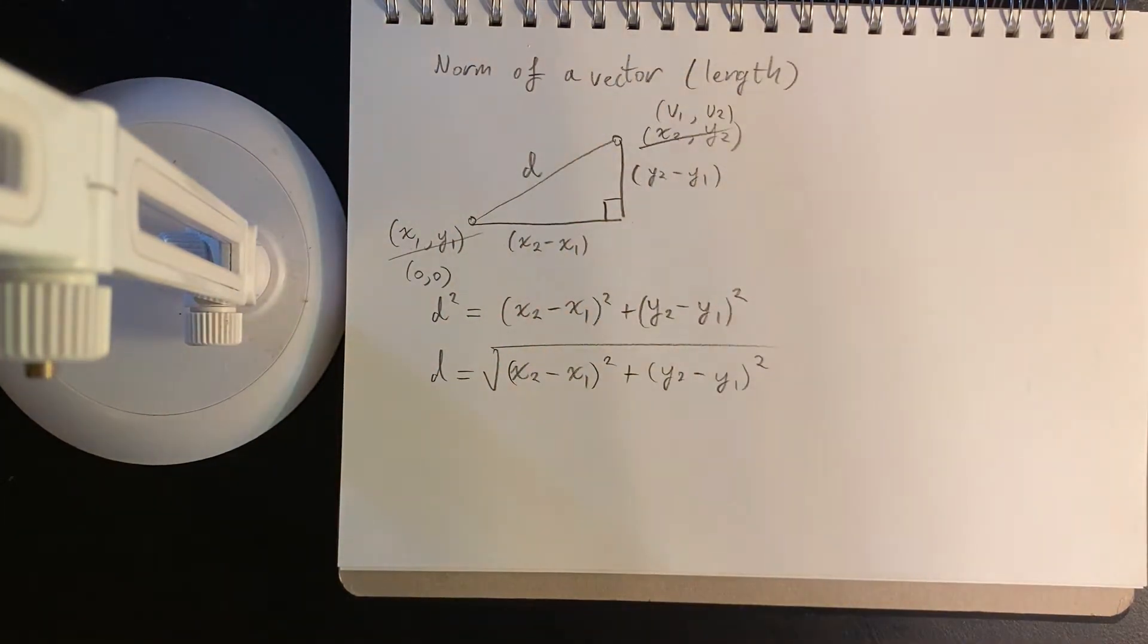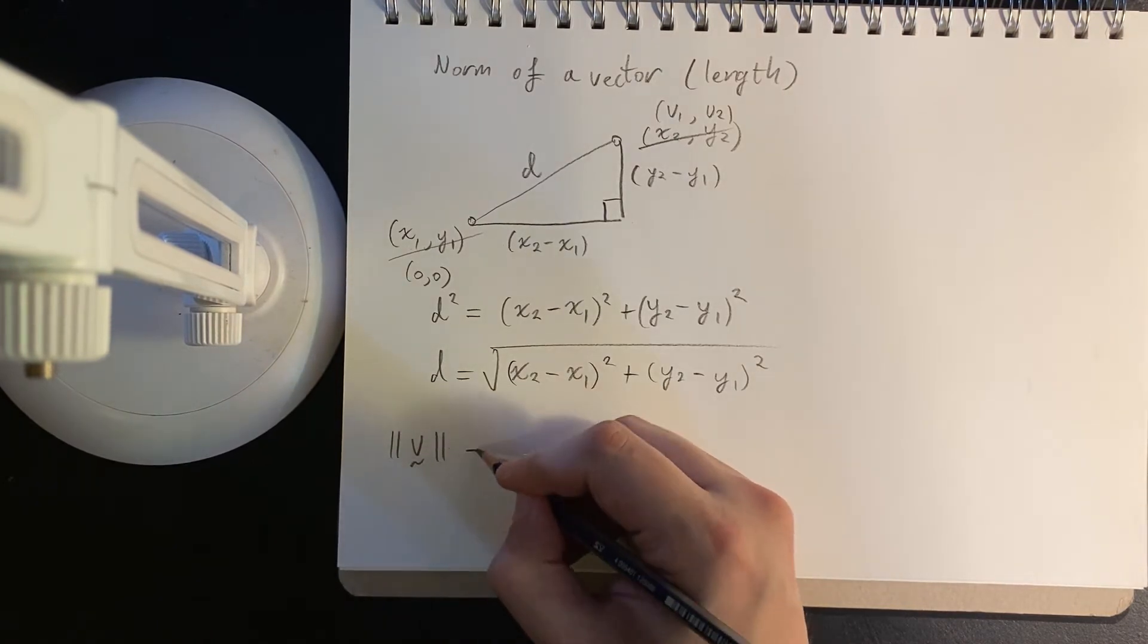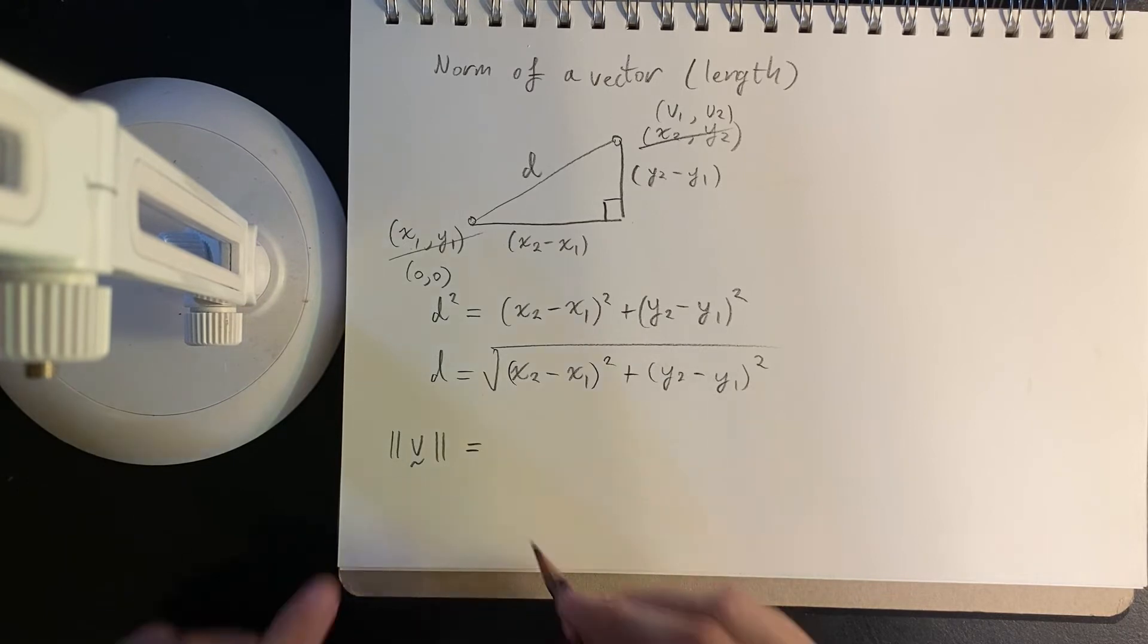I'll just call this v1, v2 are my components of my vector, then the norm of v, which is given with these two lines here,